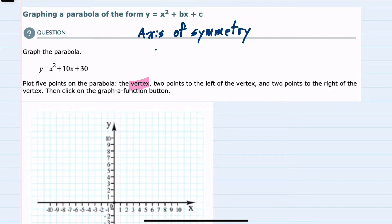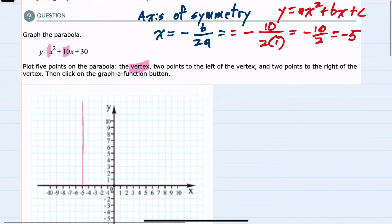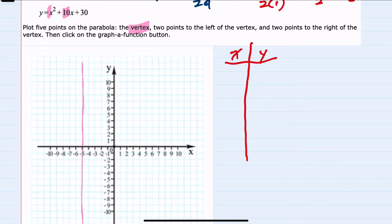So to find the vertex, to start I'll recall that to find the axis of symmetry, it will be the line that has the equation x equals negative b over 2a. And we can use this equation to find the axis of symmetry when we have the form y equals ax squared plus bx plus c. Here our a term is 1, so 2 times 1 in the denominator, and our b term is 10, so negative 10 in the numerator. This simplifies to negative 10 over 2, or negative 5.